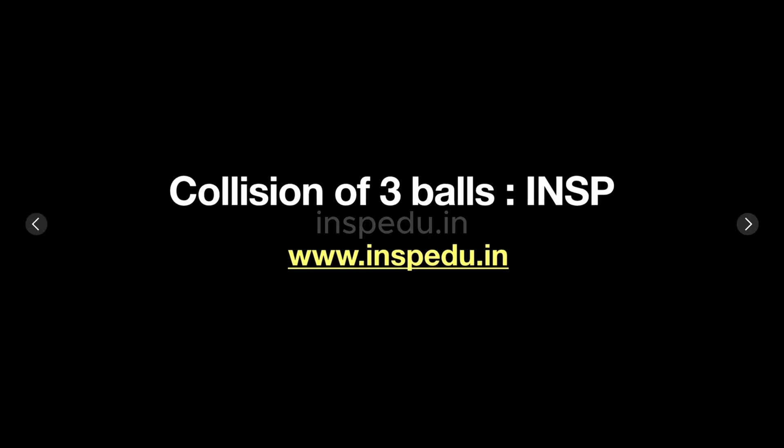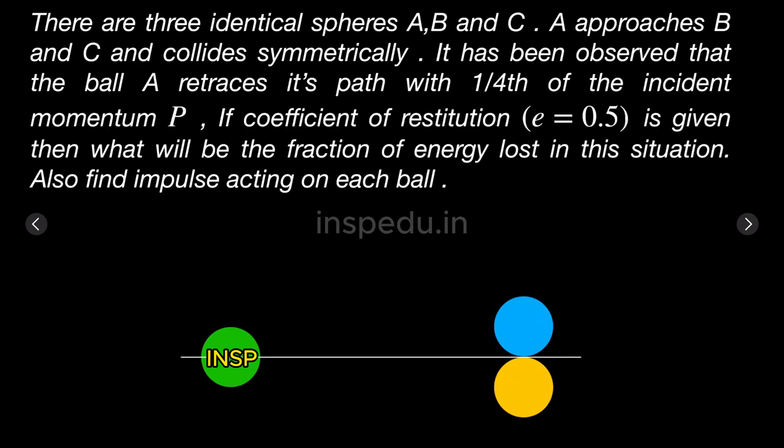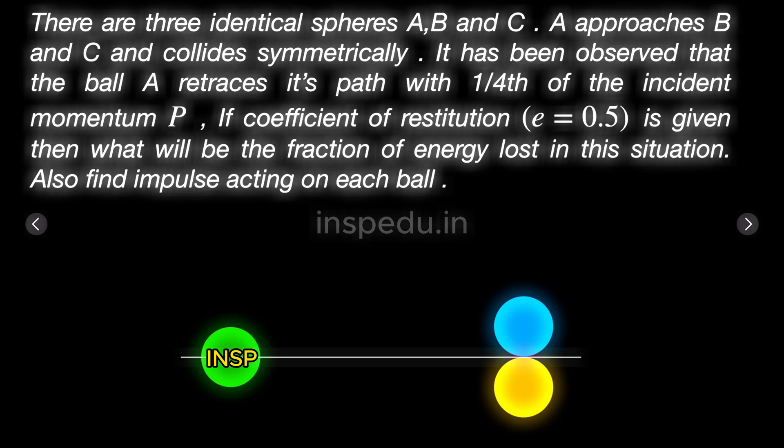Hello everyone, welcome to Indian School of Physics. Here is a problem: there are three identical spheres A, B, and C. A approaches B and C and collides symmetrically. It has been observed that ball A retraces its path with one-fourth of the incident momentum. If the coefficient of restitution is half, then what will be the fraction of energy lost in this situation? Also find the impulse acting on each.